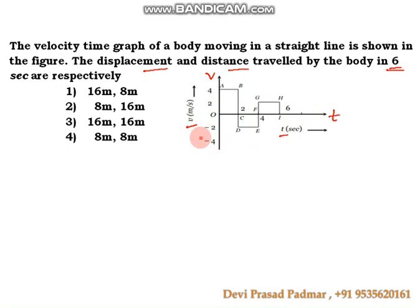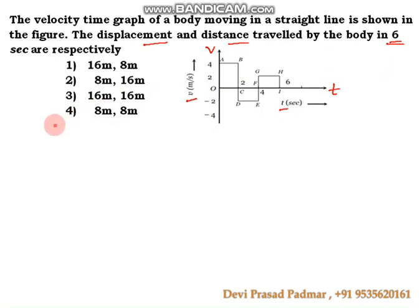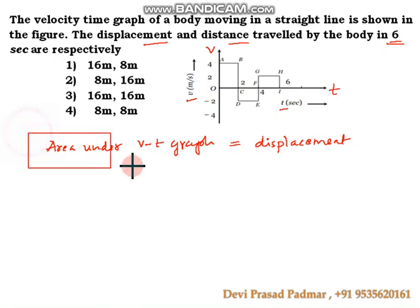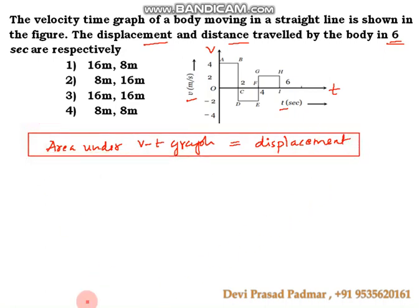The relation between a velocity-time graph and displacement is that the area under the velocity-time graph gives displacement. Using this concept, we can solve this problem. We also need to calculate distance, and we need to understand the difference between distance and displacement.